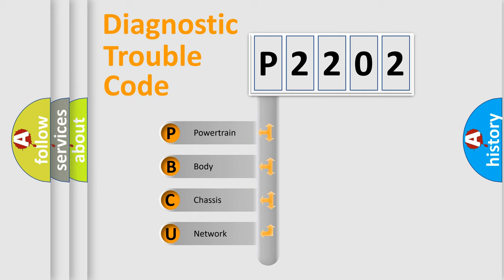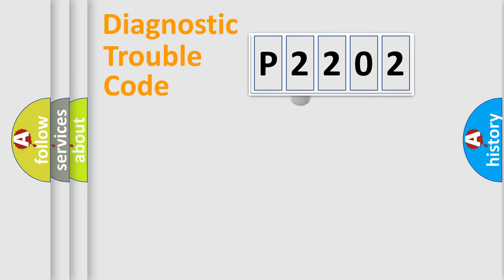We divide the electric system of automobile into four basic units: Powertrain, Body, Chassis, and Network. This distribution is defined in the first character code.